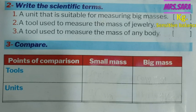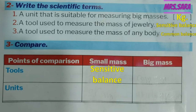Number 3: A tool used to measure the mass of anybody — like our bodies. We are big masses, so we need the measuring tool of big masses, which is the common balance. Question 3: Compare between small mass and big mass in tools and units. The measuring tool of small mass is the sensitive balance, and for big mass it is the common balance.